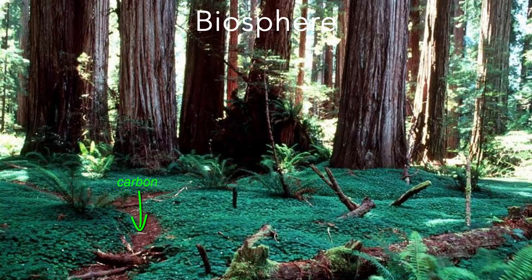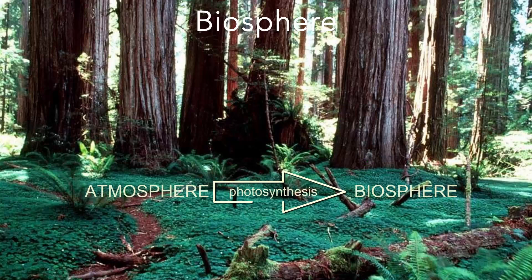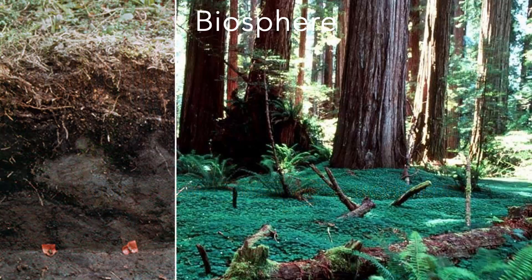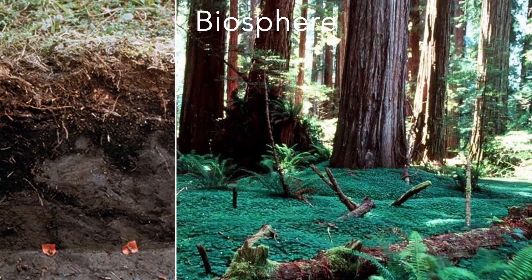Most of the carbon in the biosphere is present as plant material, or is found in soils. Plants take in carbon dioxide from the atmosphere through photosynthesis, and combine it with other elements to form carbohydrates needed for growth. Soils contain more carbon than plants, most of it in the form of decaying plant material and living biomass of microbes that help break down the dead plant matter.